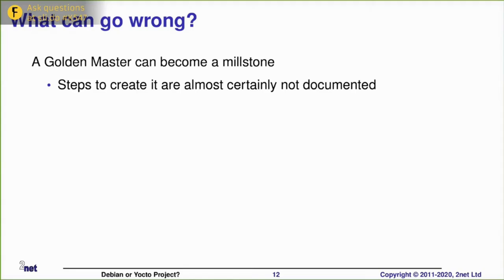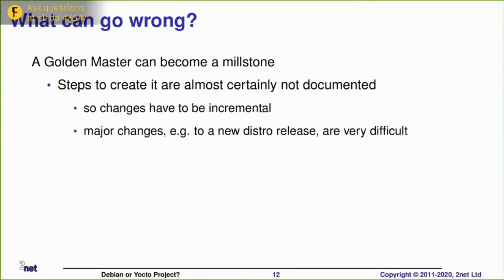So what can go wrong? The golden master, wonderful though it is, is a little bit tricky to reproduce and to maintain. First of all, the things we did a couple of slides back, probably we never wrote down exactly what we did. Even if we were fairly meticulous, there would be some steps that we skipped. So if we want to make changes to the golden master, we have to do it incrementally. We boot the golden master, add a tweak here, add a package, change a configuration file, and then we create a new golden master from that. That's all very fine until we want to make some kind of major change.